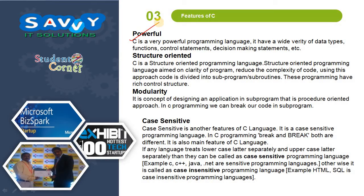Powerful: C is a very powerful programming language. It has a wide variety of data types, functions, control statements, and decision-making statements. Structure Oriented: C is a structure-oriented programming language aimed at clarity of program and reducing the complexity of code. Using this approach, code is divided into subprograms by subroutines. These programs have rich control structures. Modularity is the concept of designing an application in subprograms, which is a procedure-oriented approach. In C programming, we can break our code into subprograms.